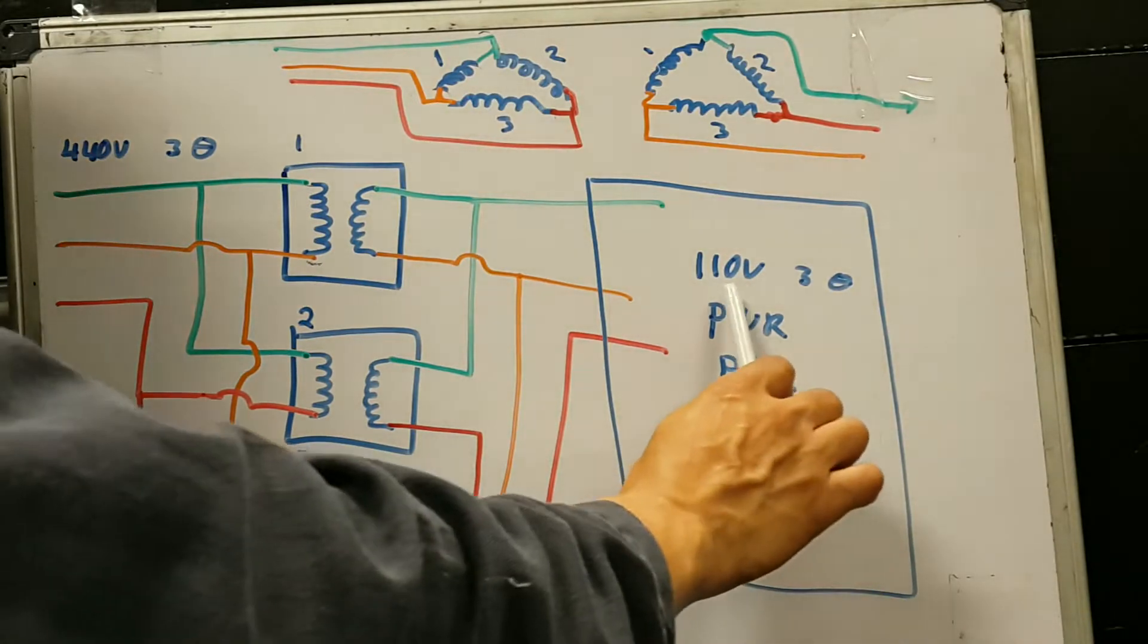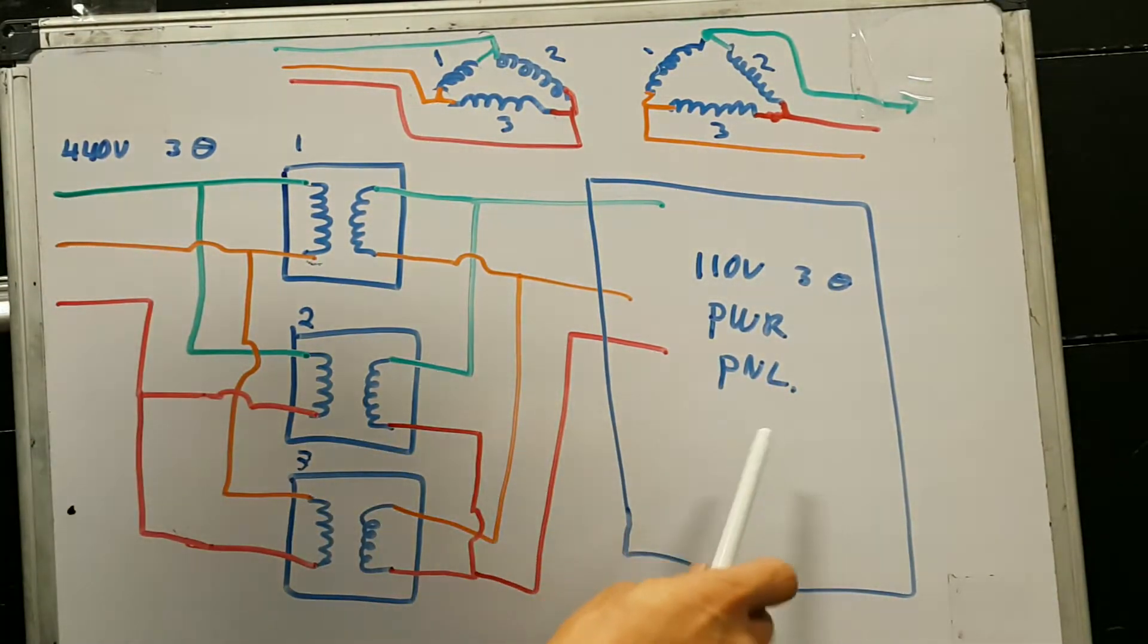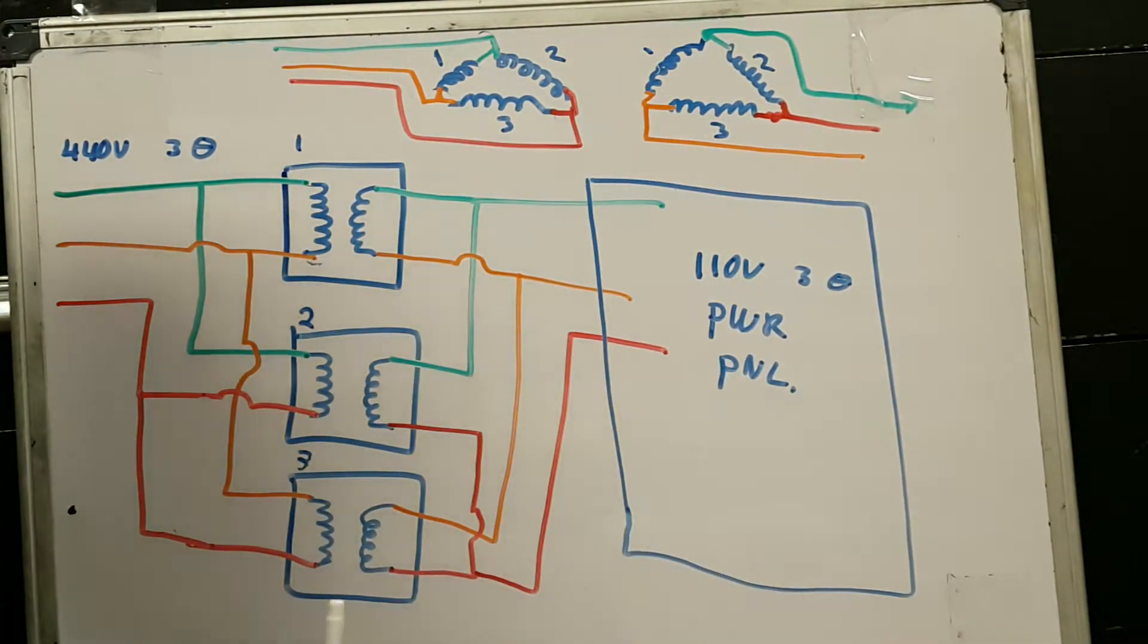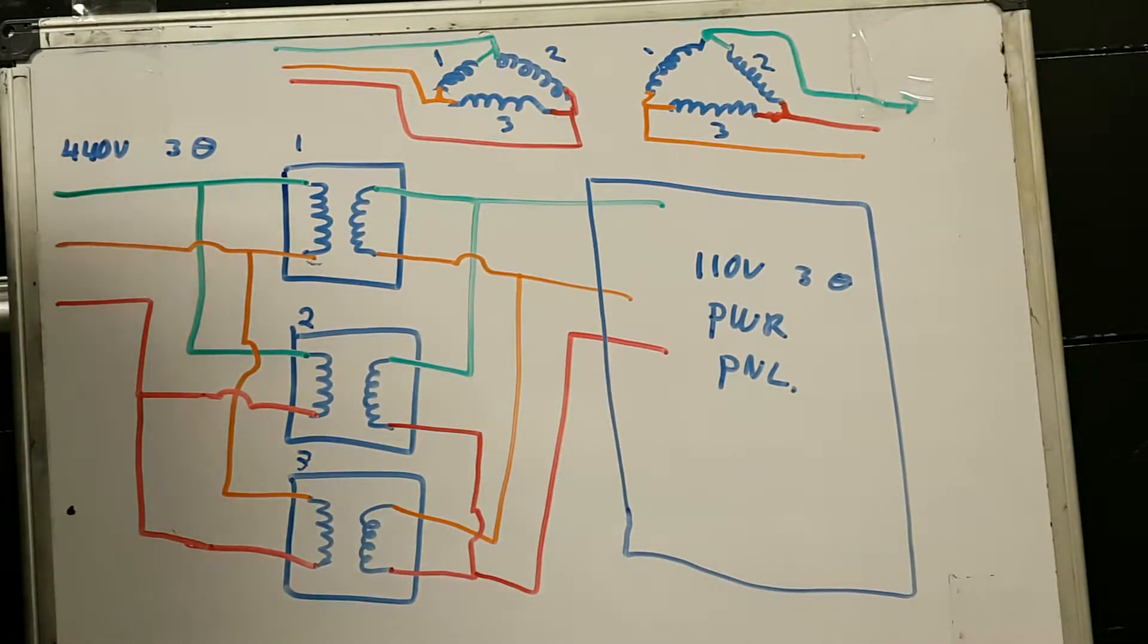On board ship, we got 110 volts too, but the way how we get that power is via step-down transformers from the 440 volt distribution system.